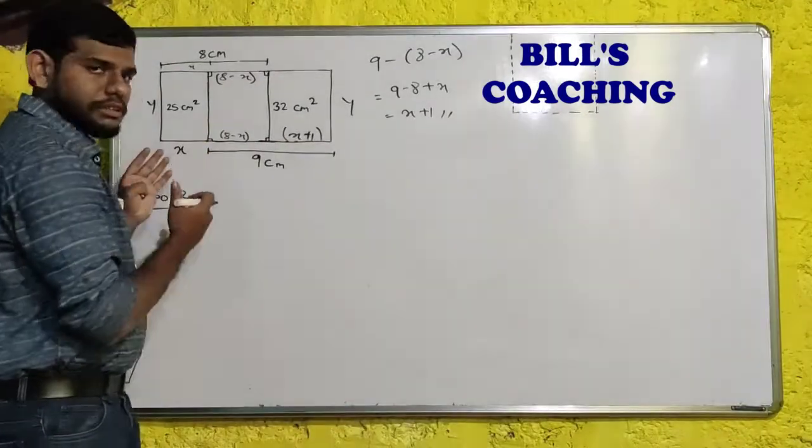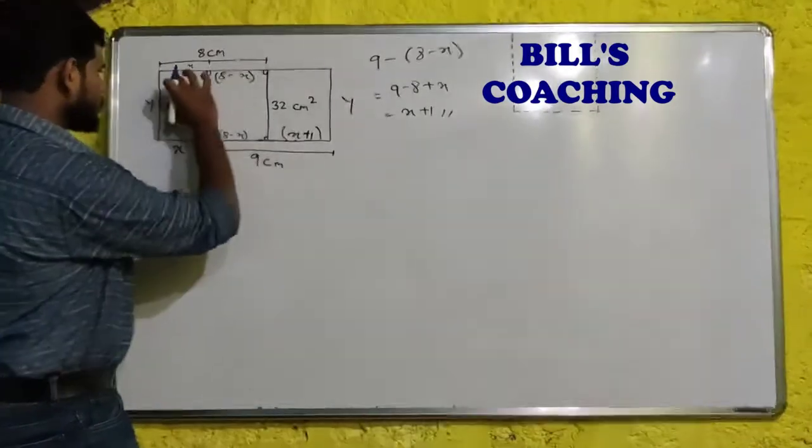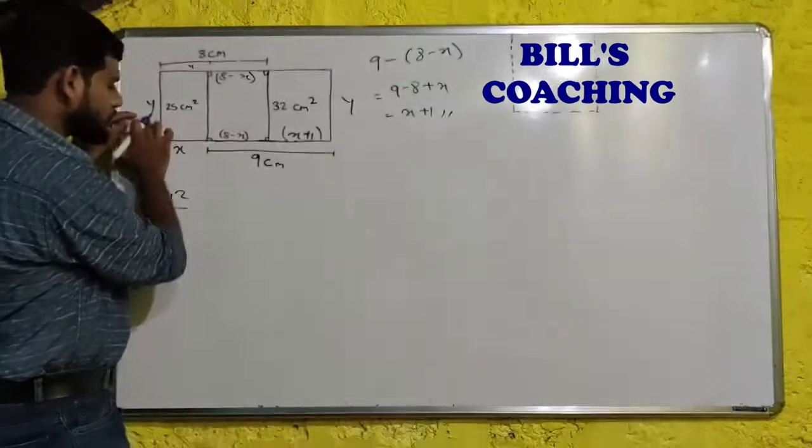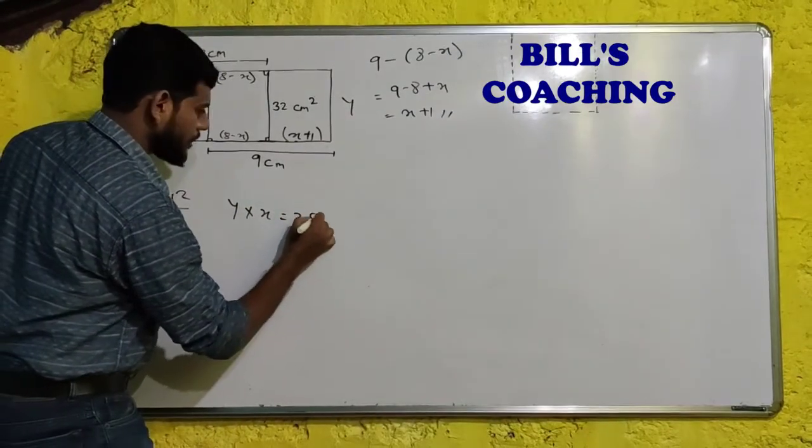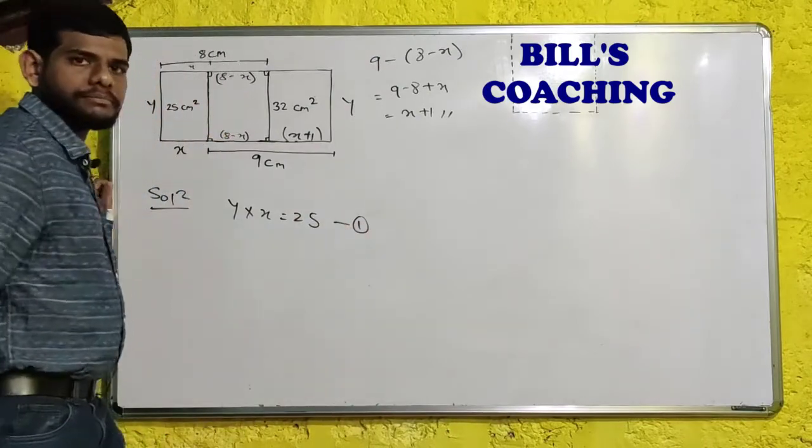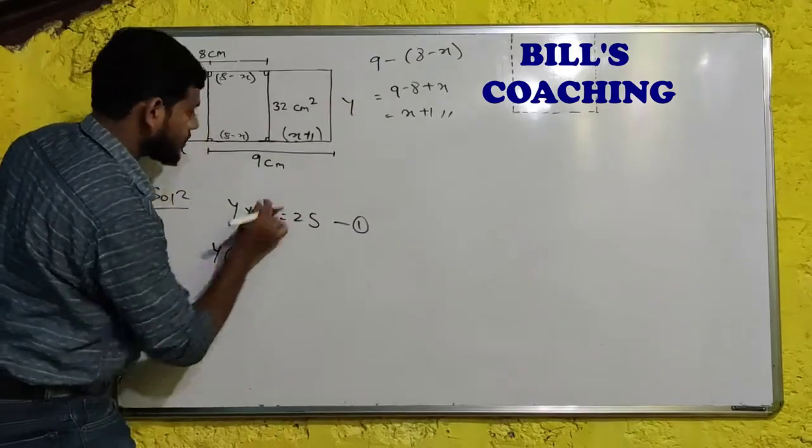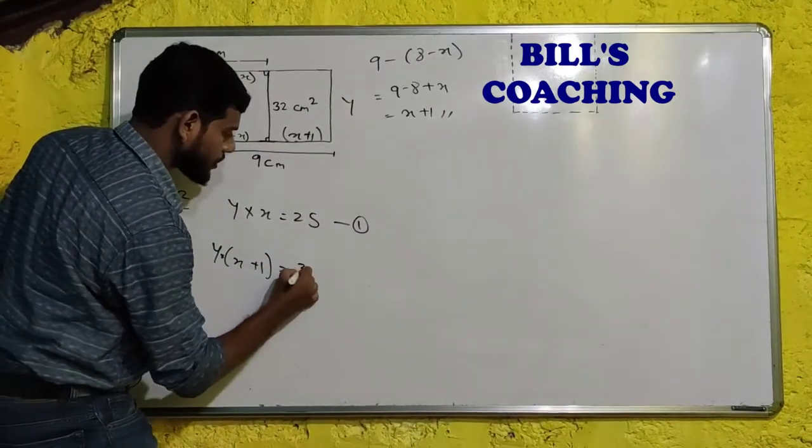Now we will one by one solve this rectangle, then solve, then we will get this. So what is this? Area of rectangle formula: length multiplied by breadth. So this is y, so we can say that y multiplied by x is equal to 25. This is our first one.